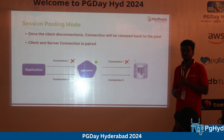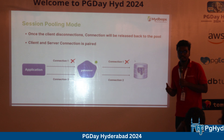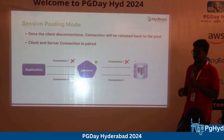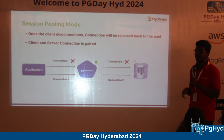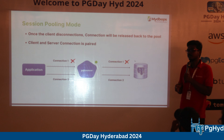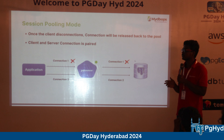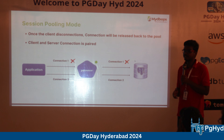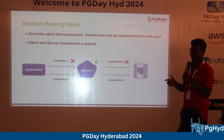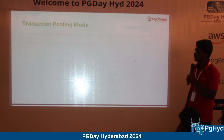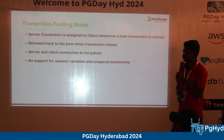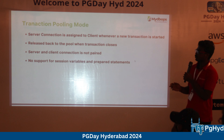When configuring PG Bouncer, the most important setting is the pooling mode. There are three pooling modes available, and you must choose the appropriate one based on your application's requirements, or you may face incompatibility issues.